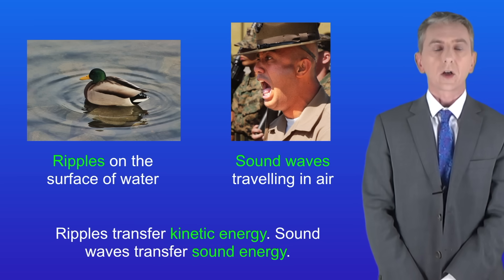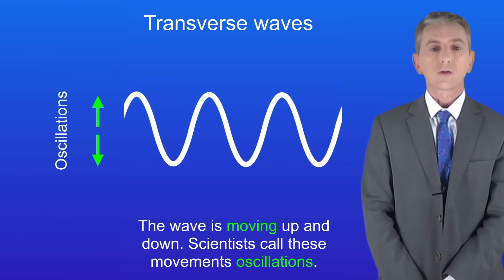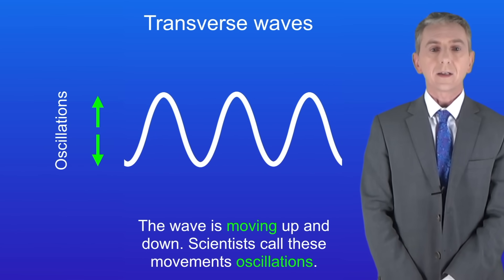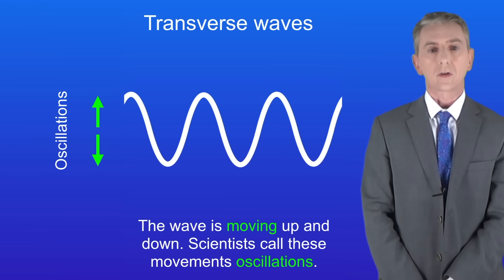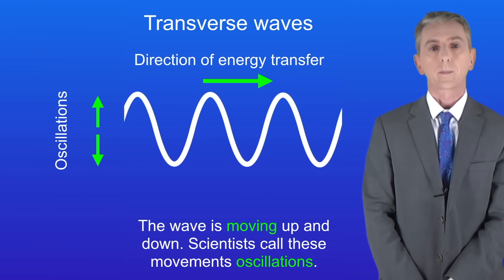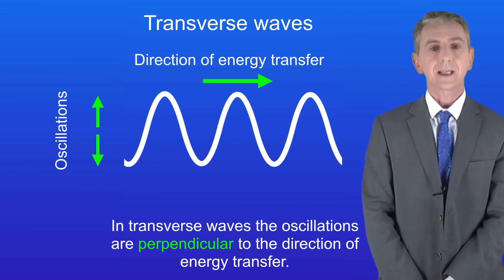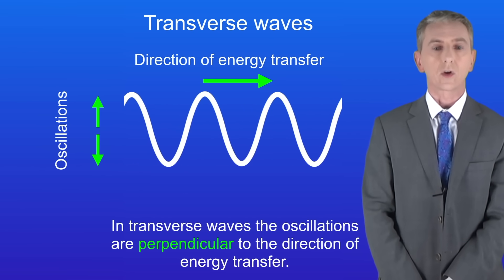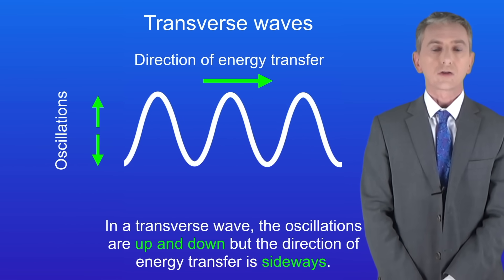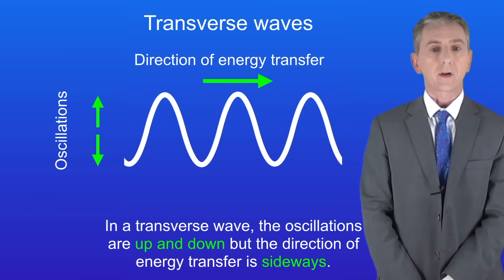Let's start by looking at transverse waves, for example ripples on the surface of water. As you can see, the wave is moving up and down — scientists call these movements oscillations. This arrow shows the direction of energy transfer. The key fact is that in transverse waves the oscillations are perpendicular — meaning at right angles — to the direction of energy transfer. So the oscillations are up and down but the direction of energy transfer is sideways.